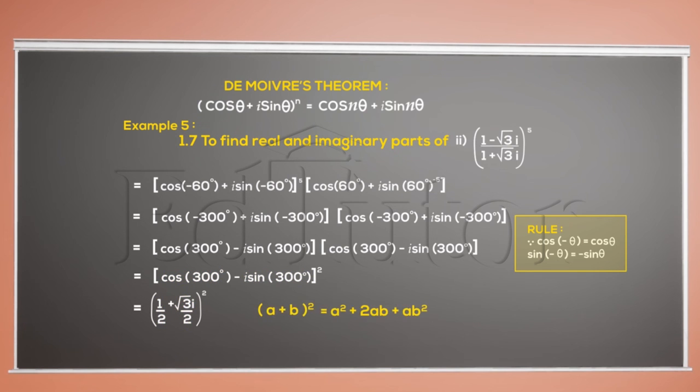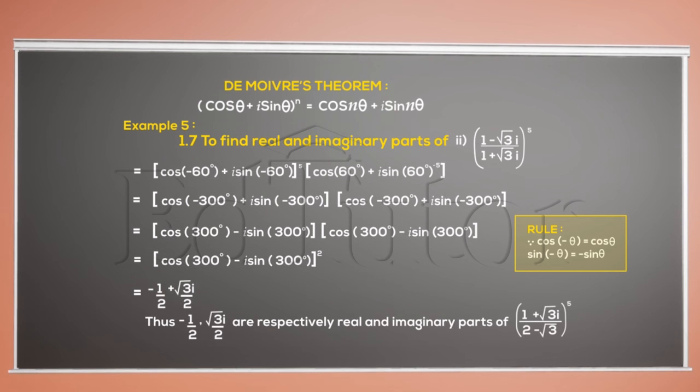Expand by using a plus b whole squared formula and simplify. And as you can see my friends, we have finally identified the real and imaginary part.